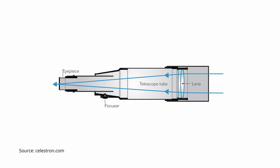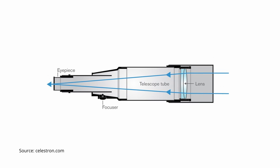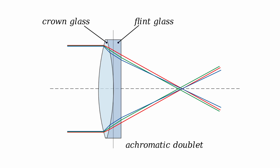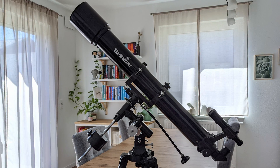A refractor uses lenses to bend and focus incoming light. All refractor designs employ a lens at the front of the optical tube called the objective. Depending on how many lens elements the objective is made of and the quality of the glass used determines the type of refractor. Achromatic refractors use a combination of two lens elements to reduce chromatic aberrations, with lenses made out of different types of glass with varying dispersion properties. These are also called doublet refractors and represent the most affordable and popular type of refracting telescopes.